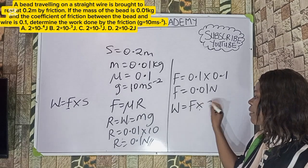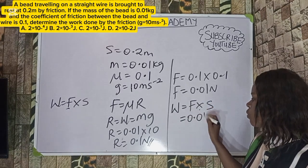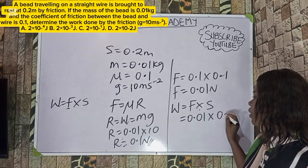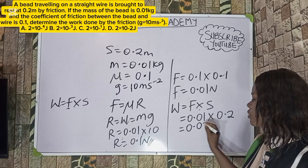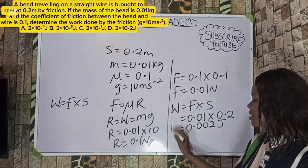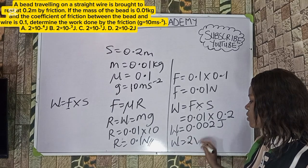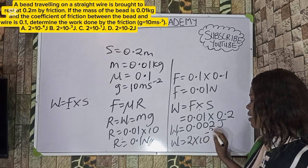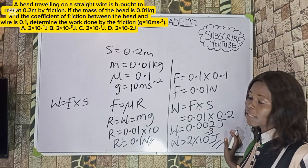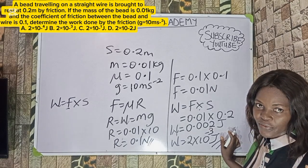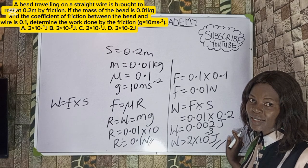Work done = force × distance = 0.01 × 0.2 = 0.002 J, which in standard form is 2 × 10⁻³ J. The correct option to this question is Option B.